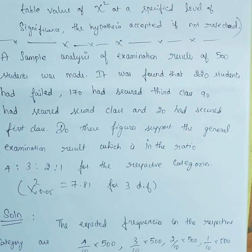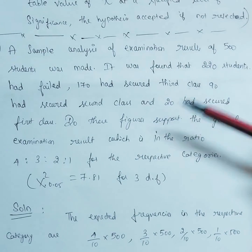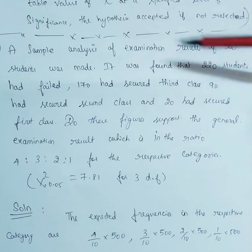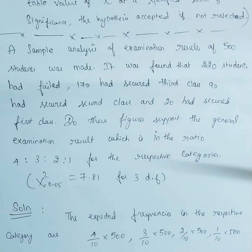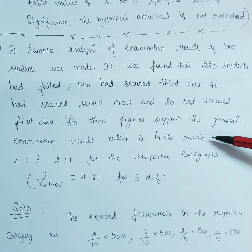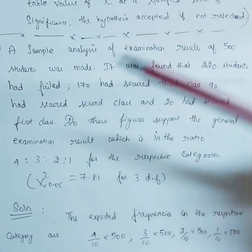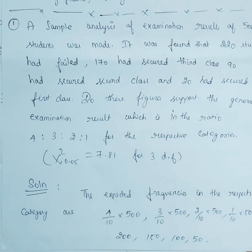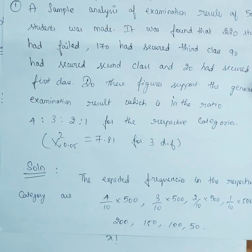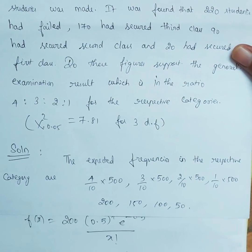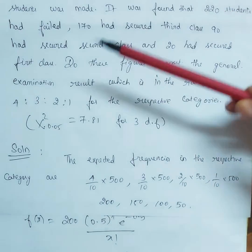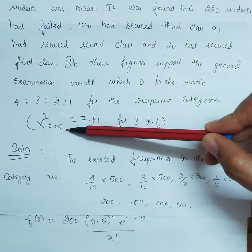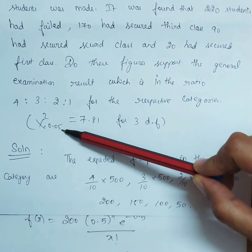A sample analysis of examination results of 500 students was made. It was found that 220 students had failed, 170 had secured third class, 90 had secured second class, and 20 had secured first class. Do these figures support the general examination result which is in the ratio 4:3:2:1 for the respective categories? The tabular value given is chi-square at 0.05 equals 7.81 for three degrees of freedom, since there are four categories, giving four minus one equals three degrees of freedom.